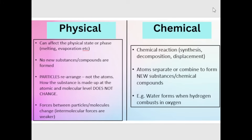Chemical change is a completely different story — that is a reaction. It can be represented by a proper balanced chemical equation. We have reactants that react together, bonds are broken, the atoms rearrange, and we form new products. We rearrange the atoms and the substance changes at a molecular or atomic level.